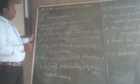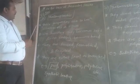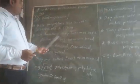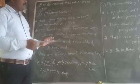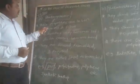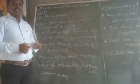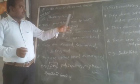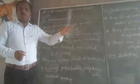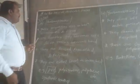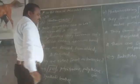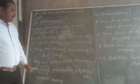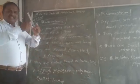The third category covers thermoplastic and thermosetting polymers. These two types are connected with each other and are best understood through a comparative study. Let us look at what thermoplastic and thermosetting mean.